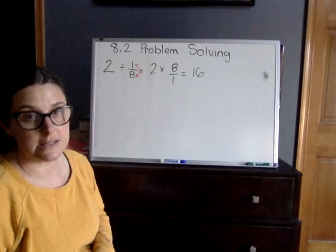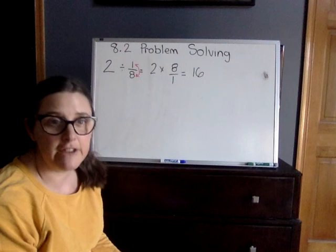Then we're just multiplying straight across. 2 times 8 is 16, and 16 is your answer. So 16 pieces would be your answer for number two.